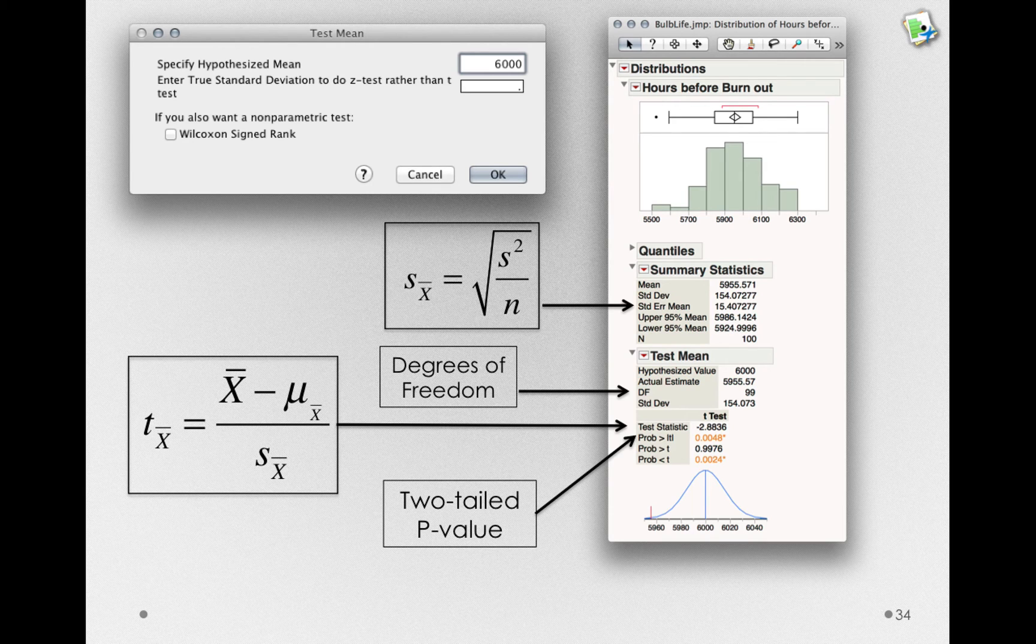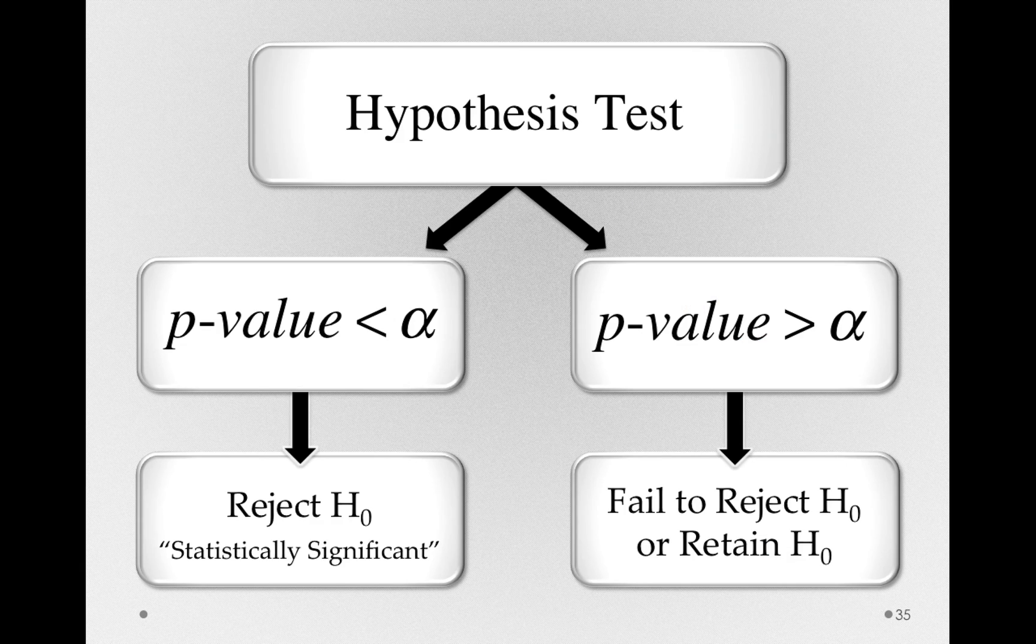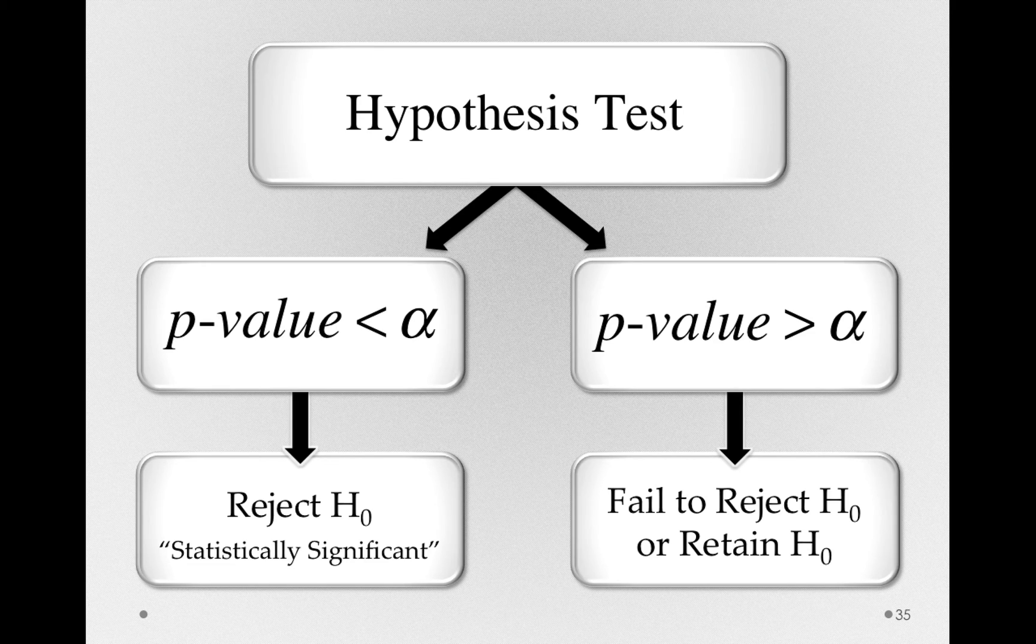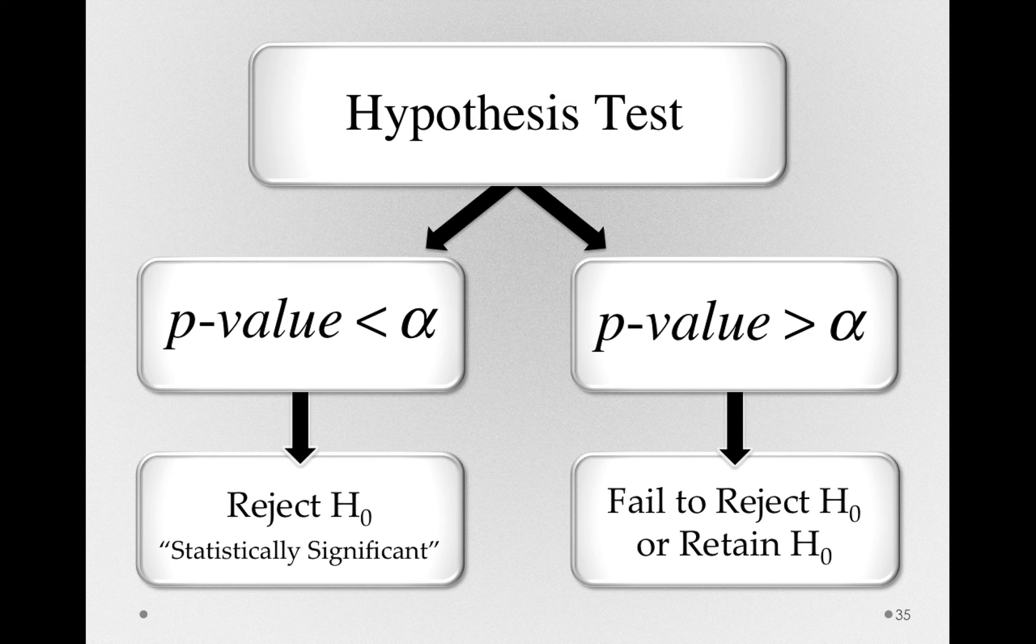So notice, even though we're using a new test statistic, the t-test statistic, we can still use our same decision. That is, we perform our hypothesis test, and if our p-value is less than alpha, we reject the null hypothesis. We can also say that this result is statistically significant. However, if our p-value were to be greater than alpha, we would fail to reject or retain the null hypothesis.